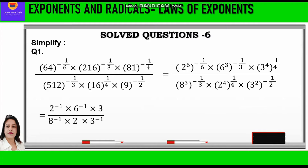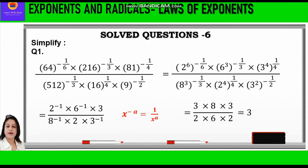The next step is to cancel: 6 by 6, 3 by 3, 4 by 4, 3 by 3, 4 by 4, and 2 by 2. We are left with 2 raised to power minus 1, into 6 raised to power minus 1, into 3, upon 8 raised to power minus 1, into 2, into 3 raised to power minus 1. Whenever we have a negative exponent, we reciprocate the base, so all negative exponents in the numerator go to the denominator and vice versa. We write 3 into 8 into 3 upon 2 into 6 into 2, which equals 3. So 3 is the answer.